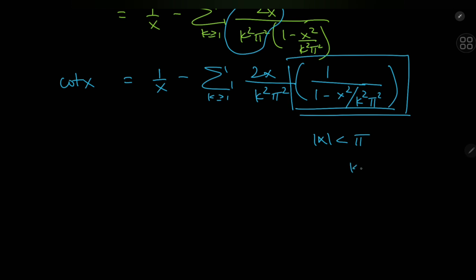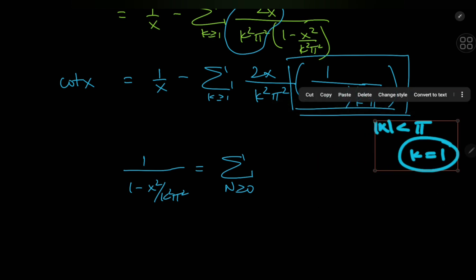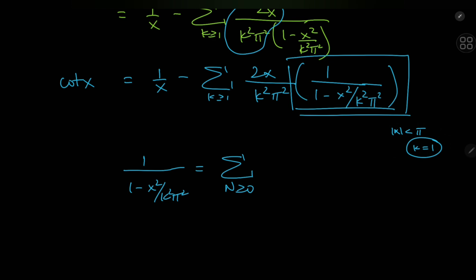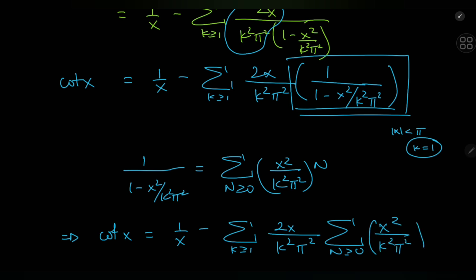Taking the k=1 term into consideration, if you let |x| < π, then the structure 1/(1 − x²/k²π²) has a convergent geometric series expansion for all values of k. So that means this can be written as the sum over non-negative integers n of (x²/k²π²)^n. So I now have a double sum: cotangent(x) equals 1/x minus the sum over k of 2x/k²π² times the sum over n of (x²/k²π²)^n.